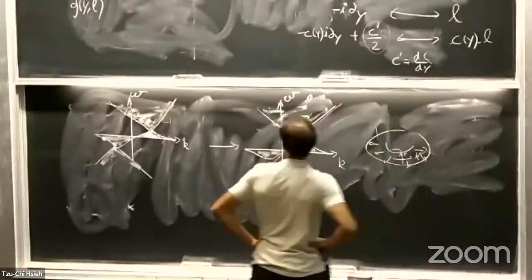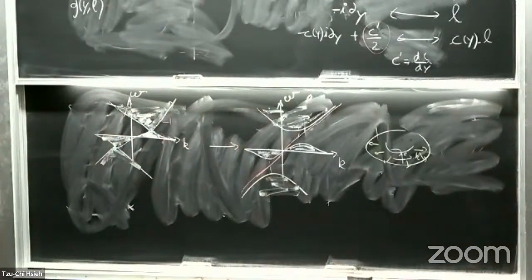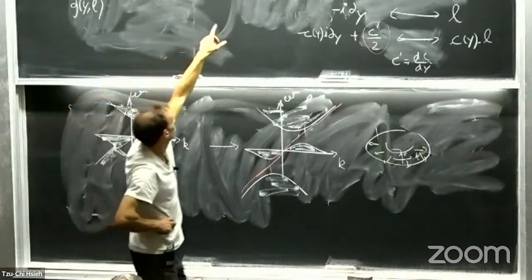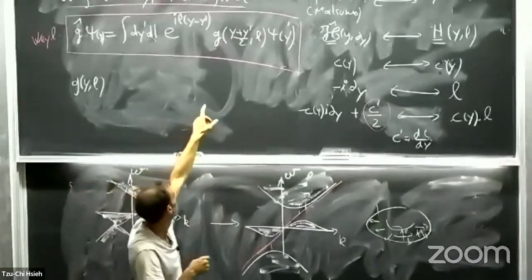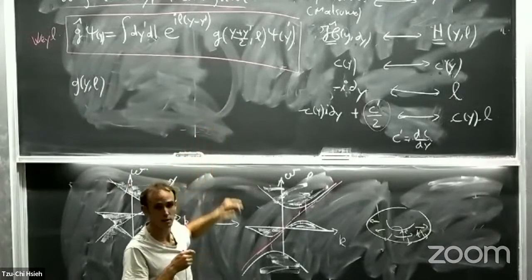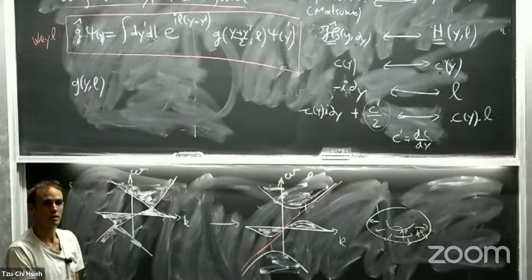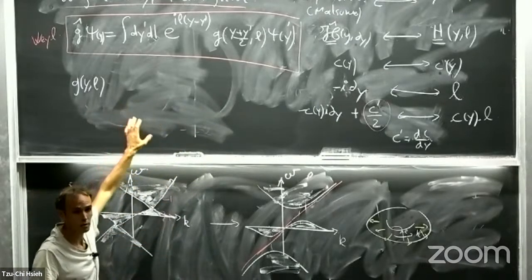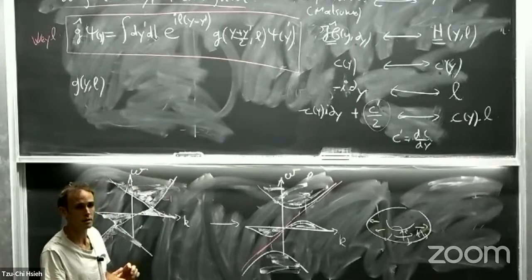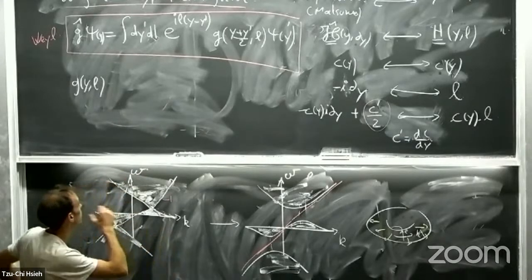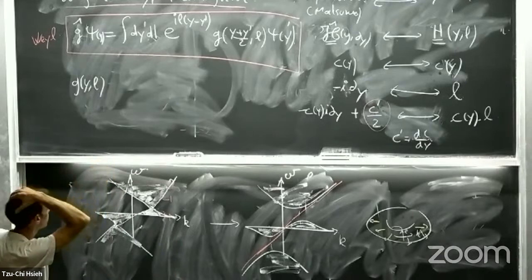The Weyl transform allows you to locally describe plane wave solutions. The way it was derived: you take the symbol — the classical picture — take the Fourier transform for both variables Y and L, then take the inverse Fourier transform, but replace the momentum coordinate in the exponential by Y. You then get products of exponentials that are not the same as the exponential of the product, and there is an operator formula for this. Different choices of ordering give different quantizations — this is one of them.